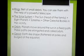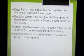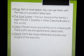Rings are built of small debris and can be seen only with the help of a powerful telescope. Some planets appear to have a ring around them, but it is not actually a solid ring — it is small particles moving around the planet that form the appearance of a ring.